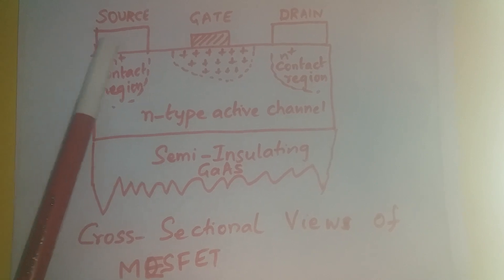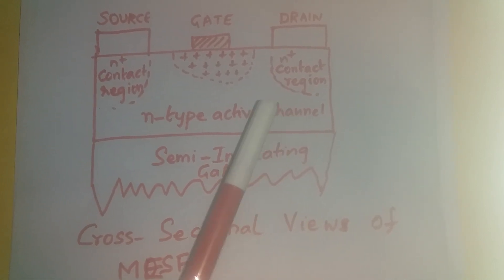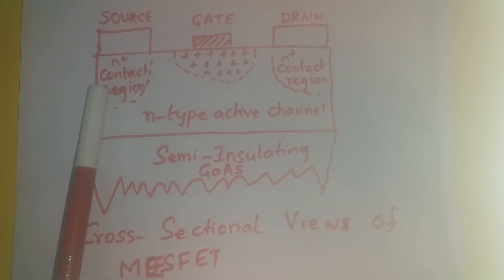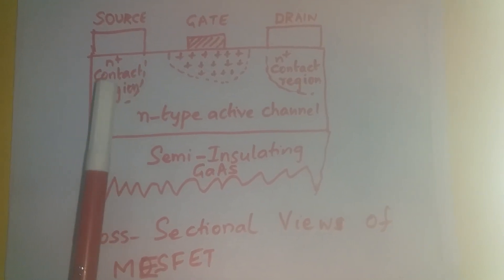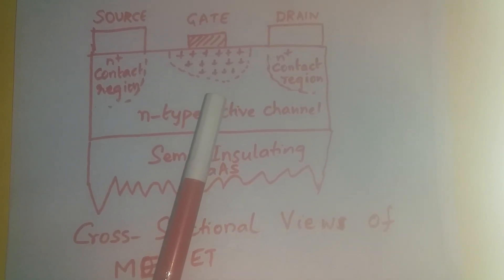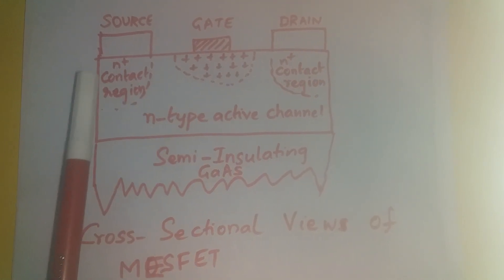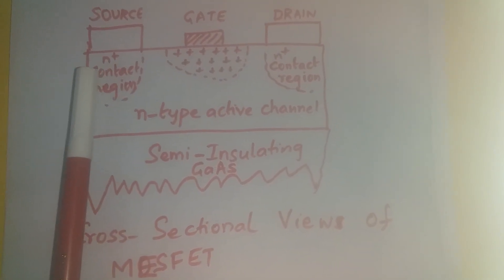And you see that source and drain, below the source and drain contact regions, the doping concentration is higher than that of other areas. This is to reduce unwanted contact resistance.